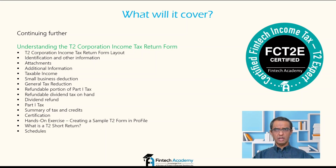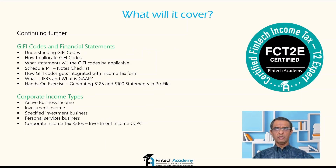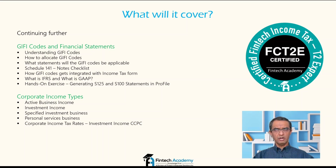We'll cover what is a T2 short return and information about that. Then we'll look at some of the schedules associated with the T2. Once we have a good understanding of the T2 income tax form layout and its details, we'll move on to understanding GIFI codes and financial statements — what GIFI codes are, how to allocate GIFI codes, what statements they apply to in Schedule 141 (the notes checklist), how GIFI codes integrate with the income tax form, what IFRS and GAAP are, and a hands-on exercise generating Schedule 125 and Schedule 100 statements in Profile.